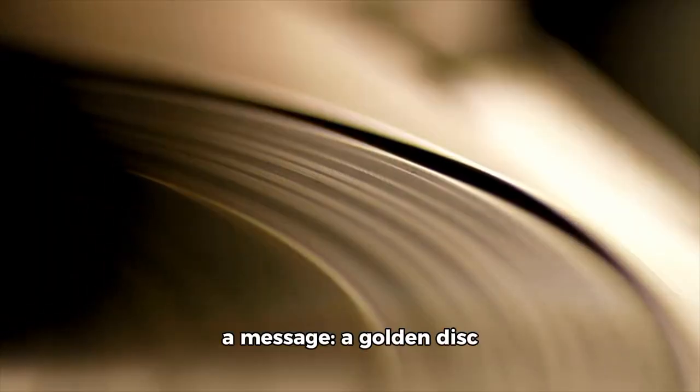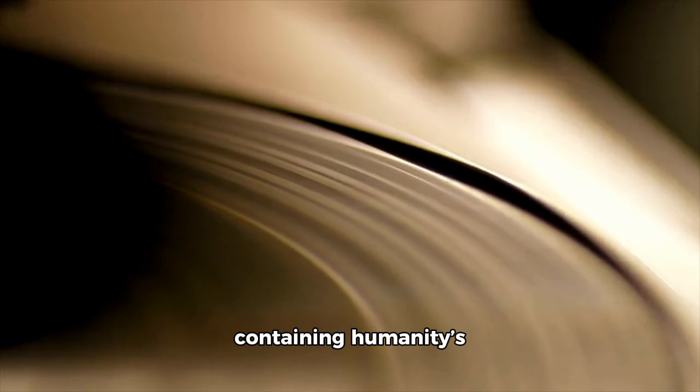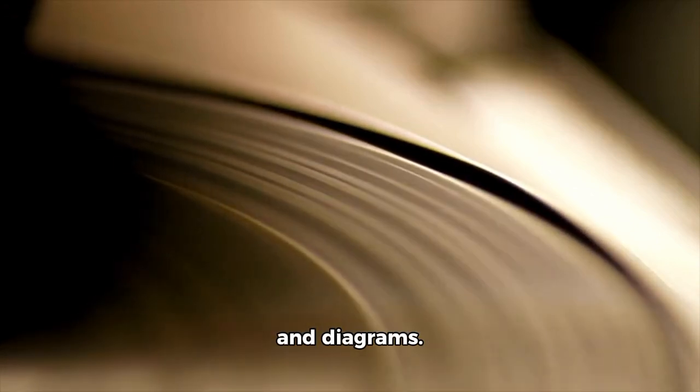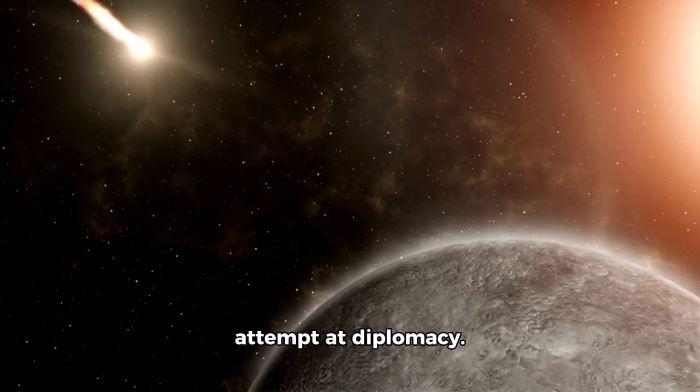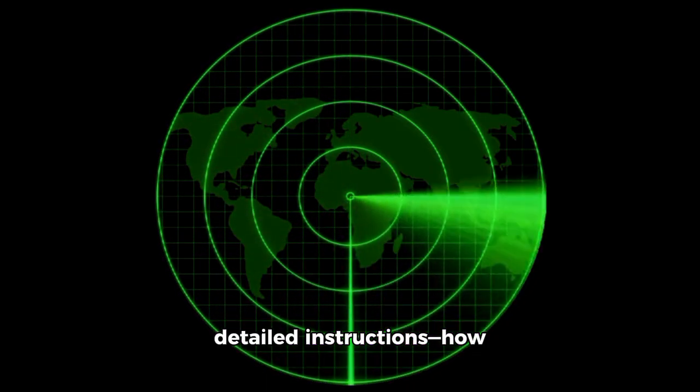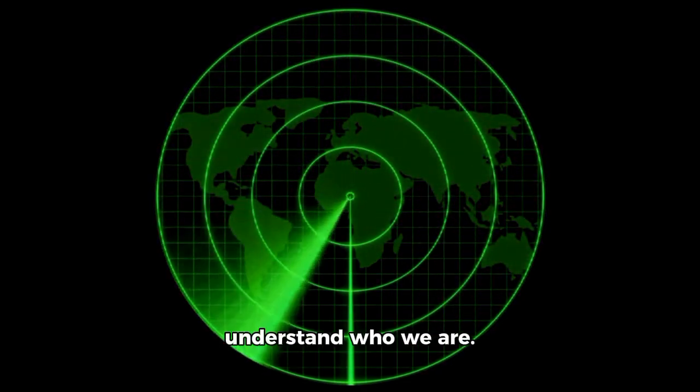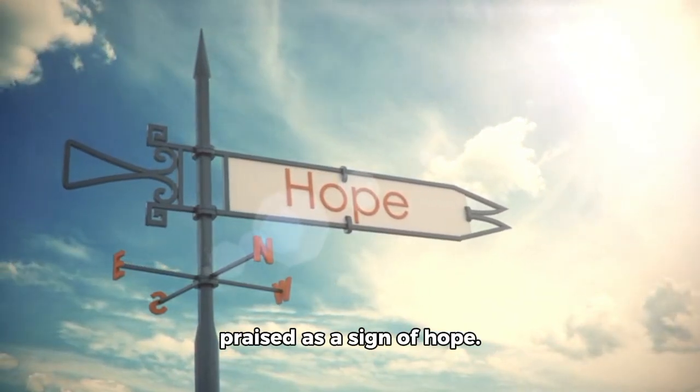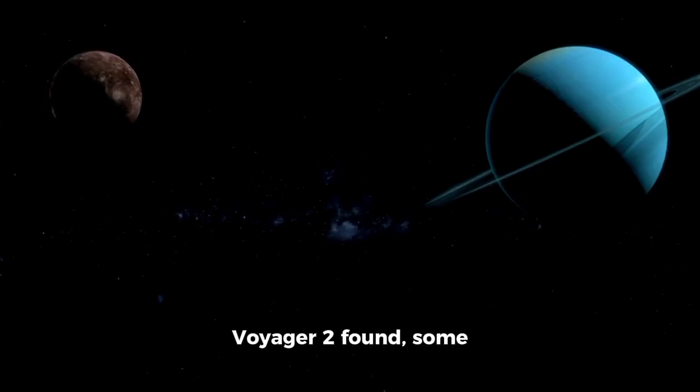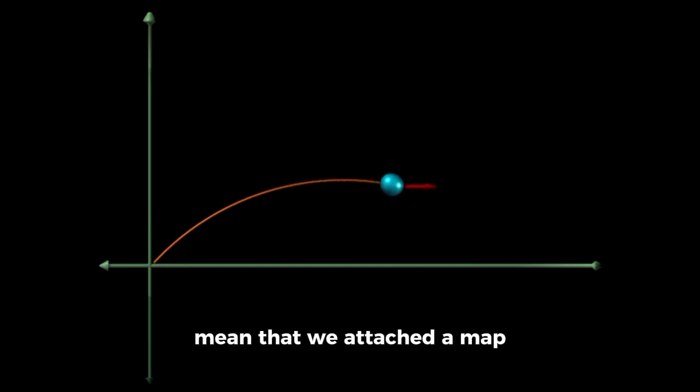Attached to Voyager 2 is a message, a golden disk containing humanity's greetings, sounds, music, and diagrams. A stunning interstellar attempt at diplomacy. But within that disk are detailed instructions: how to locate Earth, how to read the disk, and how to understand who we are. For a long time, this was praised as a sign of hope. But based on what Voyager 2 found, some now see it differently. If the boundary separating our system from the galaxy is not a gradual dimming, but rather a sharply defined edge, if it responds, if it watches, then what does it mean that we attached a map to our home on the very probe that crossed that edge?